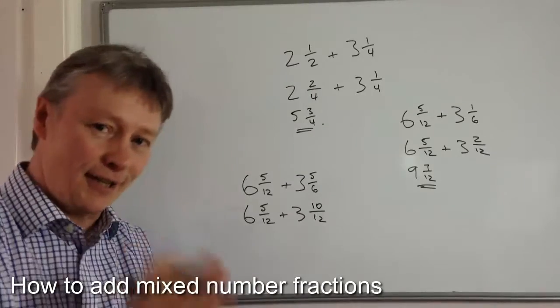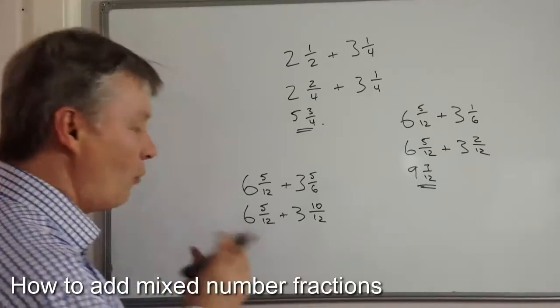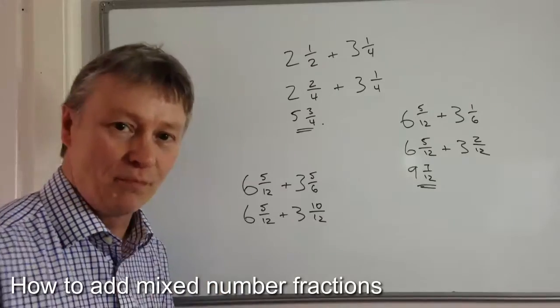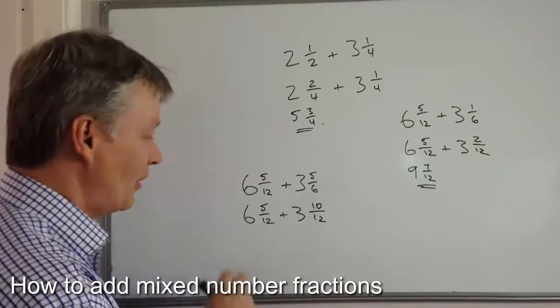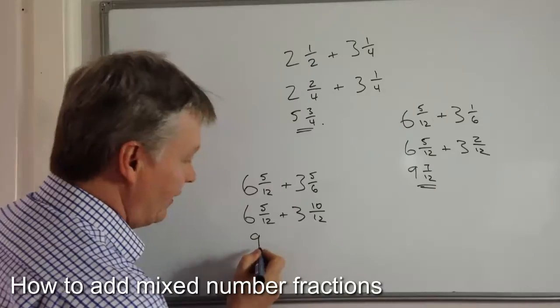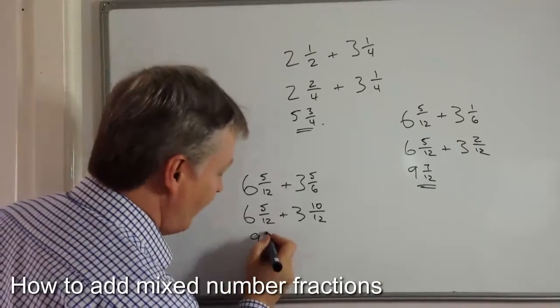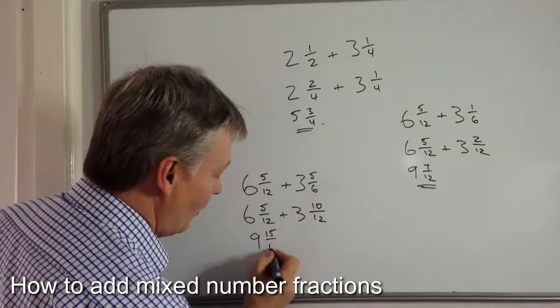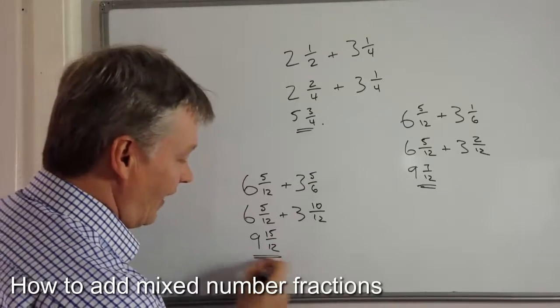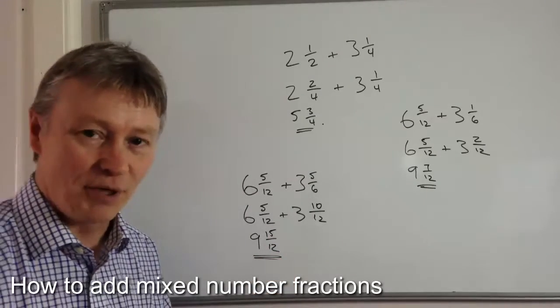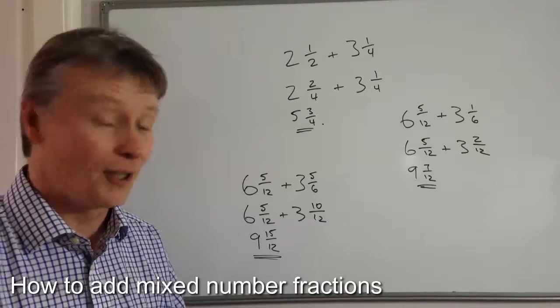This is where it's slightly different. And you need to be aware of working with mixed numbers and top-heavy fractions. But I've got six plus three is nine. Five twelfths plus ten twelfths is fifteen over twelve. Now that is kind of the right answer, but it's just better to tidy it up a little bit.